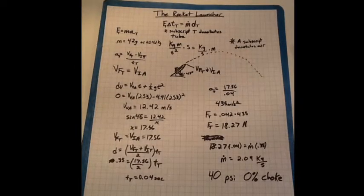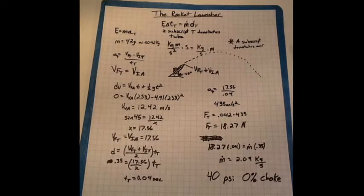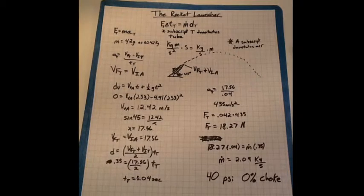We will now analyze the effect of constricting airflow when pressure is a constant 40 PSI and the constriction changes from 0 to 45% choke.